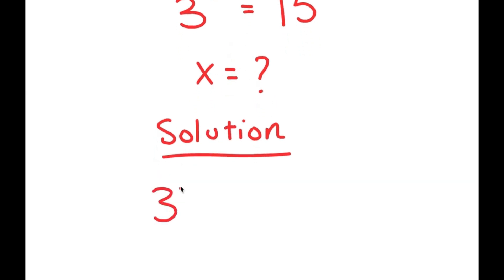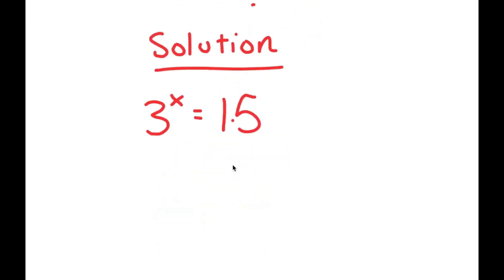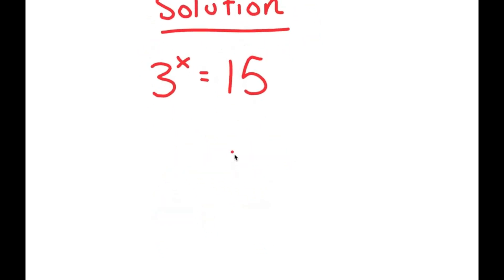Let me first start by rewriting my equation down here. So 3 to the power of x is equal to 15, and I can rewrite 15 as 3 times 5.